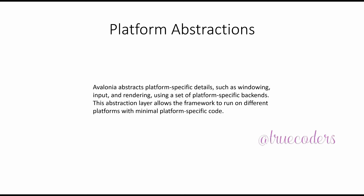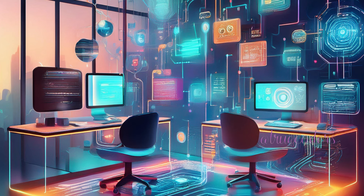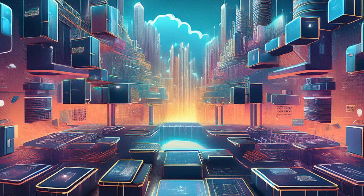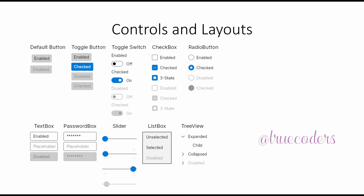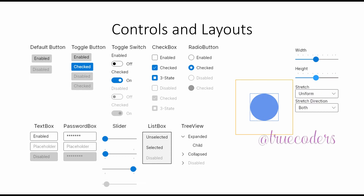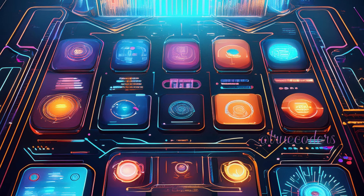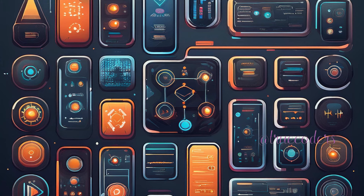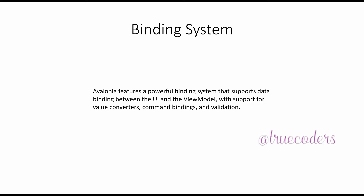Avalonia abstracts platform-specific details such as windowing, input, and rendering using a set of platform-specific backends. This abstraction layer allows the framework to run on different platforms with minimal platform-specific code. Avalonia has a comprehensive set of UI controls such as buttons, text boxes, and lists, which can be composed and arranged using various layout containers like StackPanel, Grid, and DockPanel.